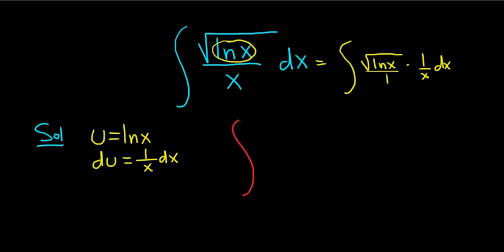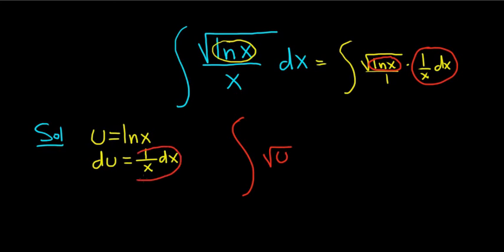This becomes the indefinite integral. The ln piece is going to be u, so it's simply the square root of u. And then we have 1 over x dx — well, we said that was du. So this is du.